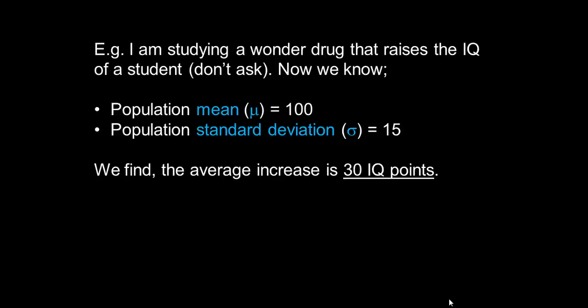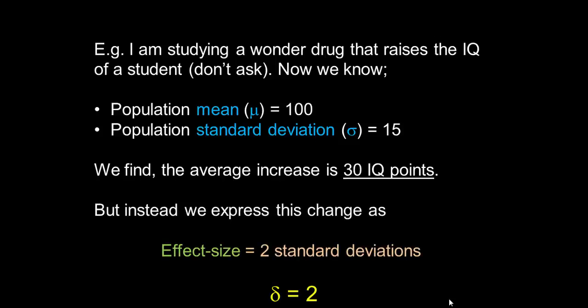Now imagine as a result of our experiment we have found that on average the increase is 30 IQ points, which is really impressive. We don't express our change as 30, we instead express it as two, because it's two standard deviations, two lots of 15s. So the effect size delta would equal two in this case. That is an enormous value, and normally a value approaching one will be considered large.